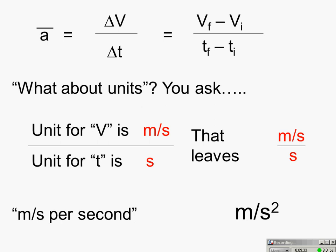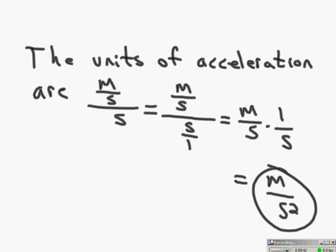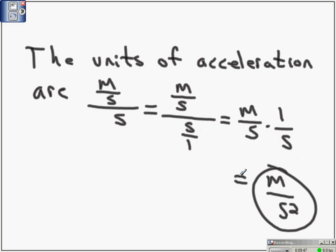Meters per second per second reduces to meters per second squared. To show the math: meters per second over seconds over one — multiply by the inverse — gives meters over seconds squared, or m/s². That's how we get meters per second squared as the unit for acceleration.